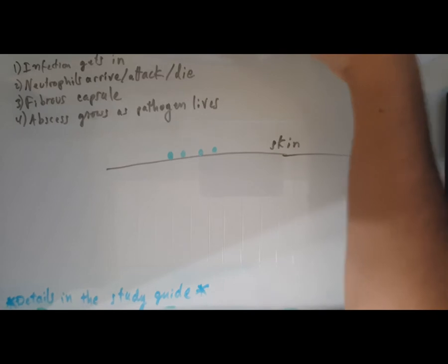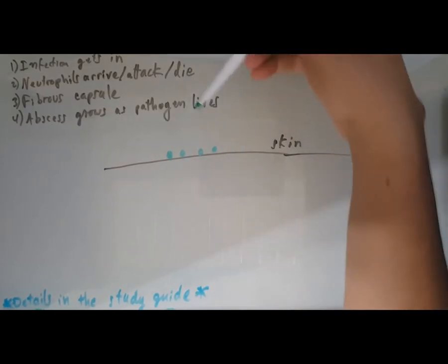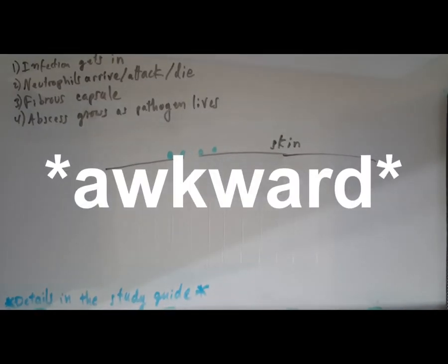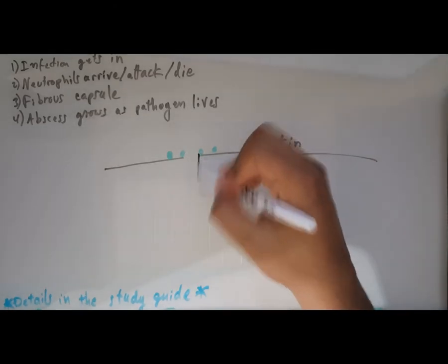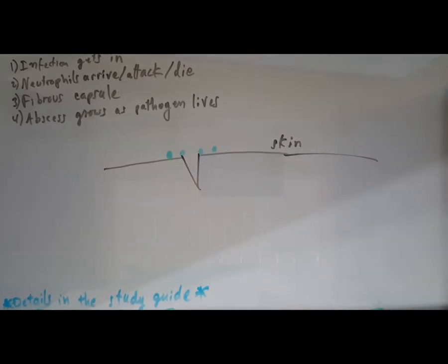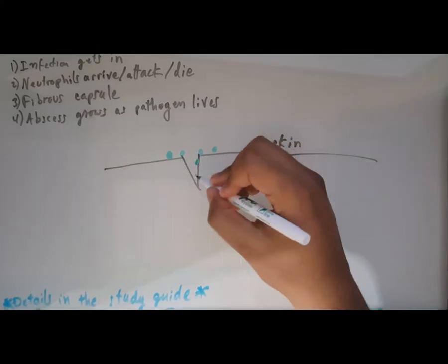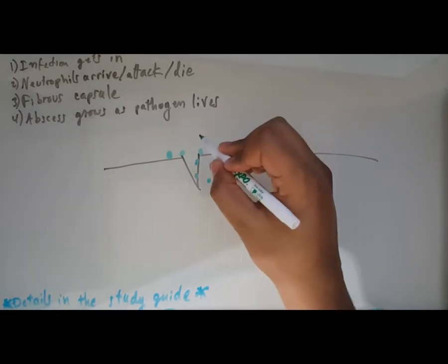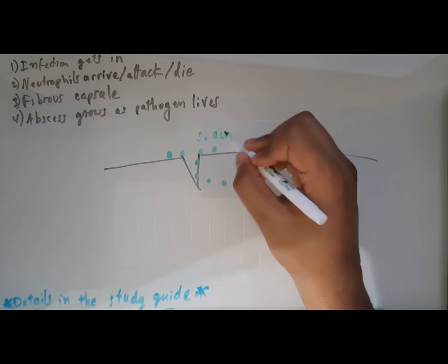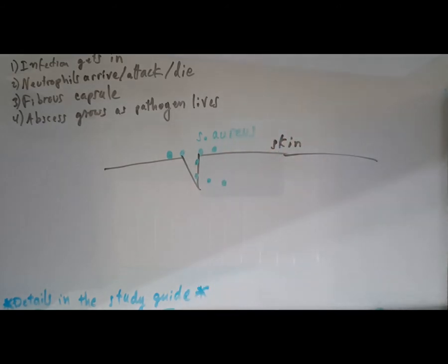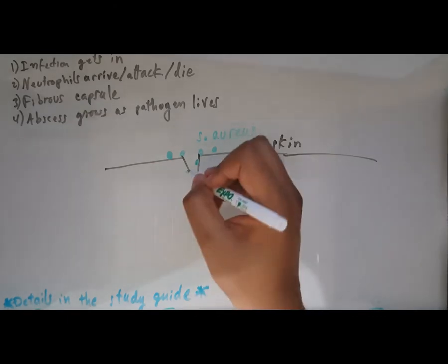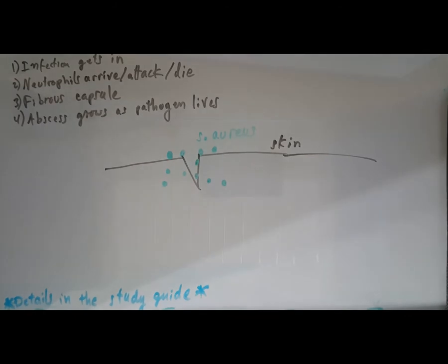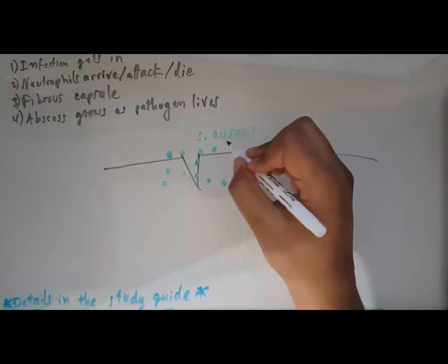Staph aureus is on your skin and first it has to get in. That can happen if you cut yourself - glass or whatever. The infection gets in and moves into your skin. Now you have staph aureus inside your body. That's going to be step one - the infection gets in.